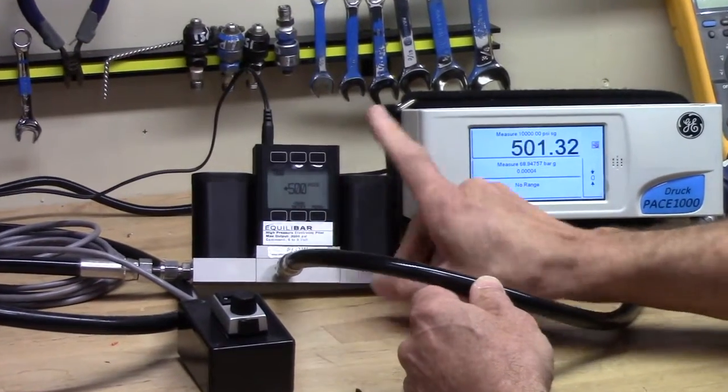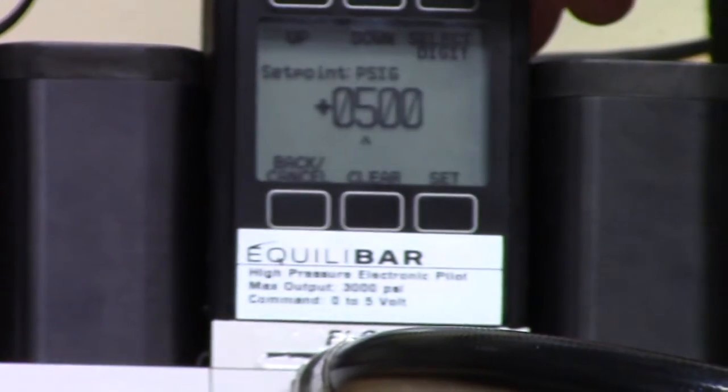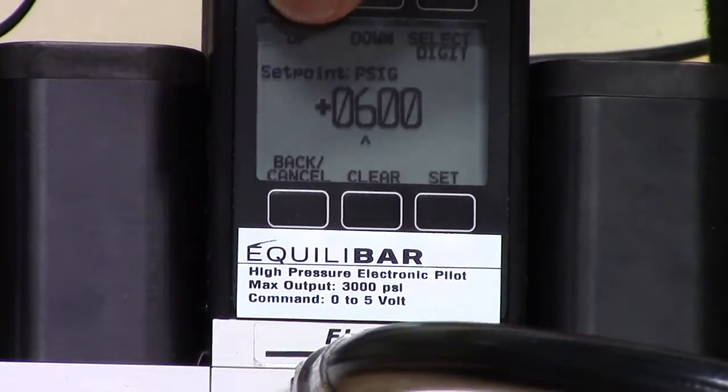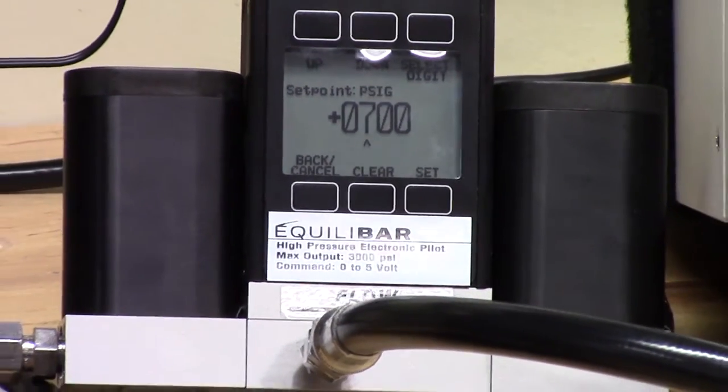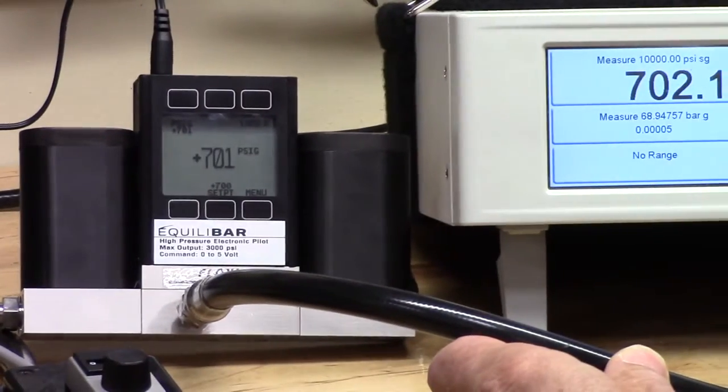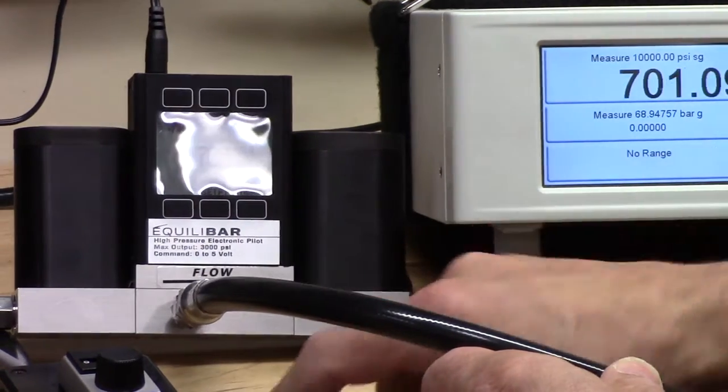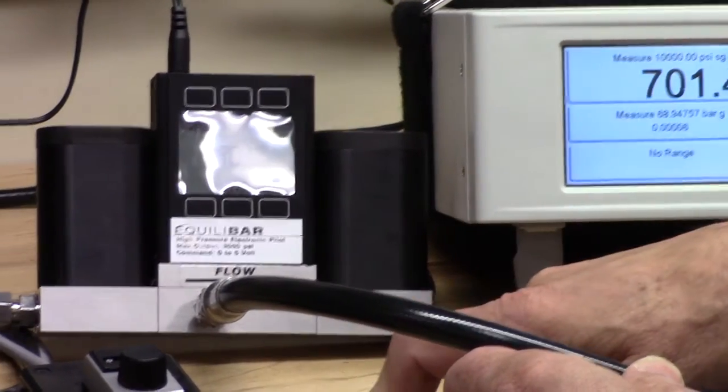We want to change that pressure again. We change the set point, press the set point set, select the digit we wish to change, go to 700 pounds per square inch and press set. And the pressure is of course within one half of one percent.